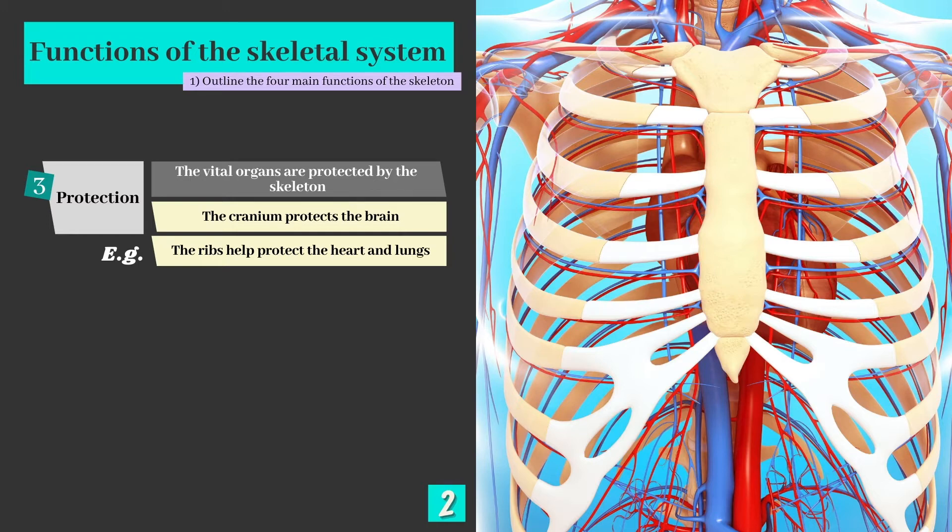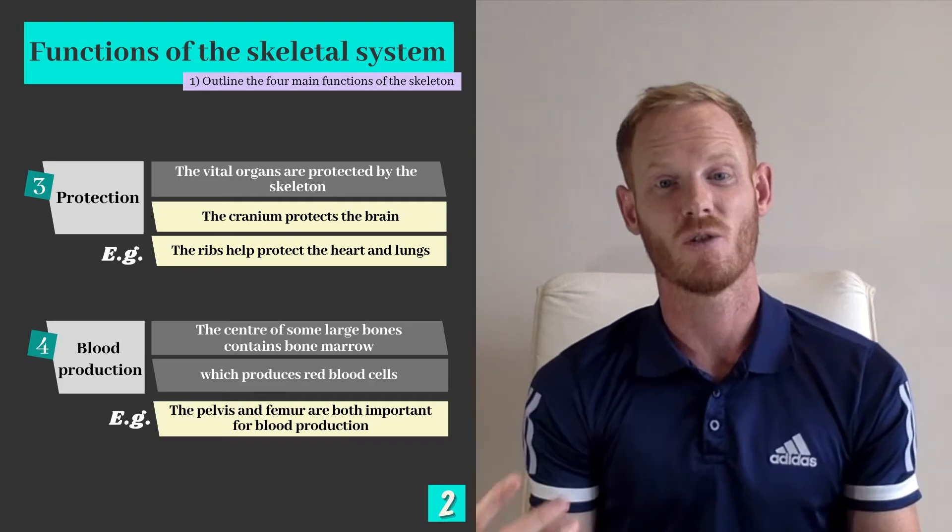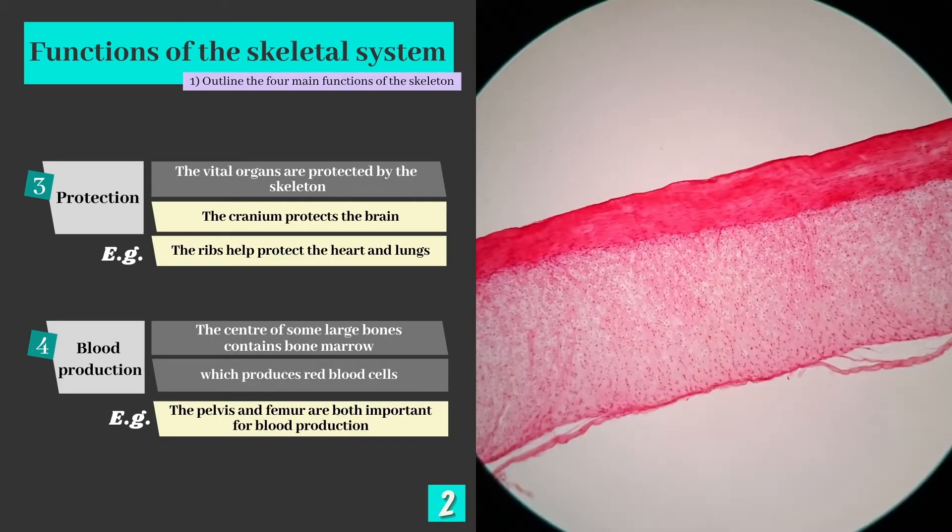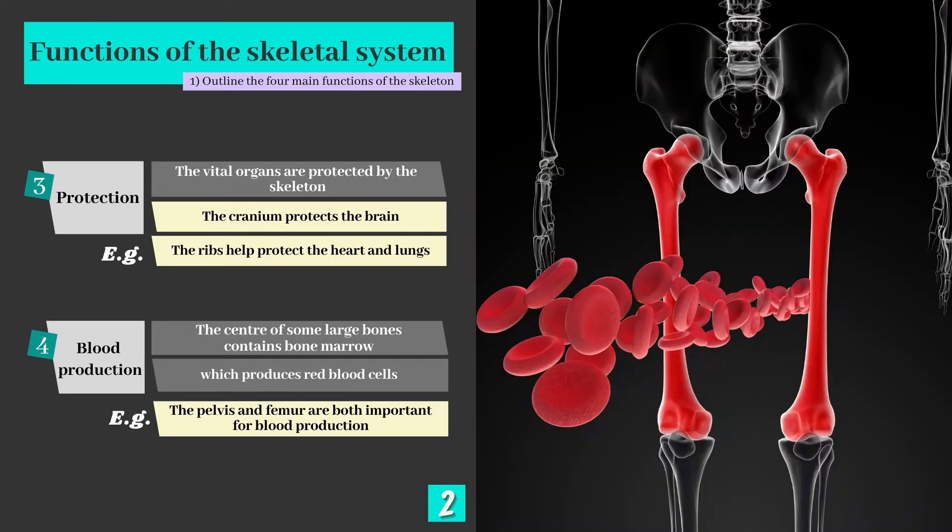Our final function is blood production. Now the centre of some large bones contain bone marrow, specifically red bone marrow, which produces red blood cells. The pelvis and femur are large bones which contain lots of bone marrow and are therefore really important for red blood cell production.